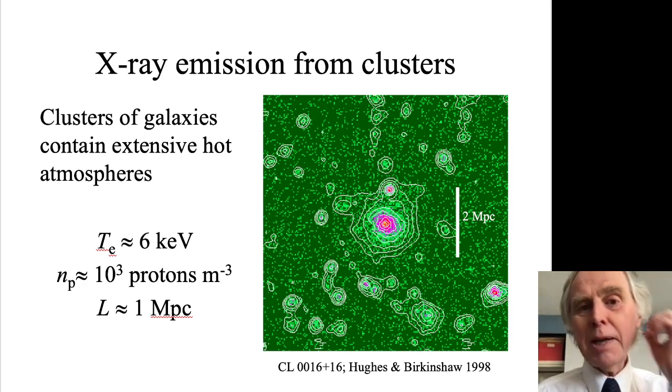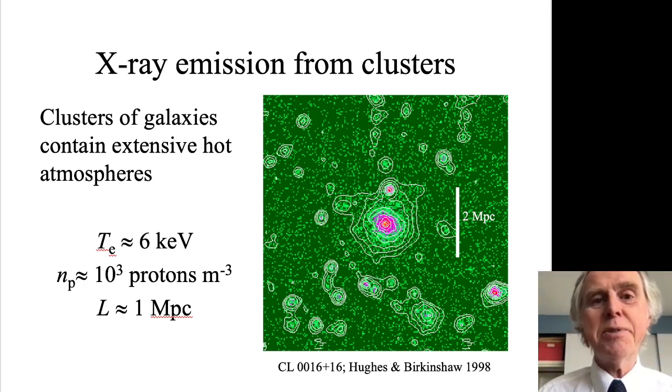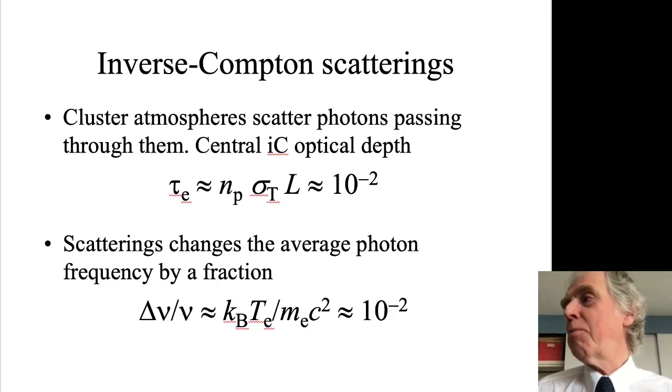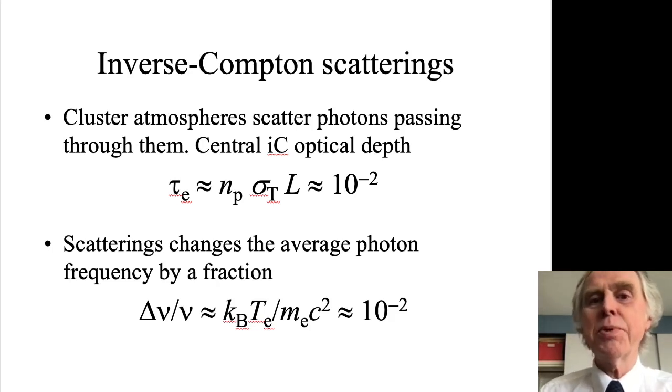What happens to a background microwave radiation field as it encounters a cluster? You get scattering. There's some optical depth to so-called inverse Compton scattering, which is the probability that a photon of the microwave background radiation coming through the cluster gets close enough to actually an electron, which does most of the scattering, to be changed in frequency.